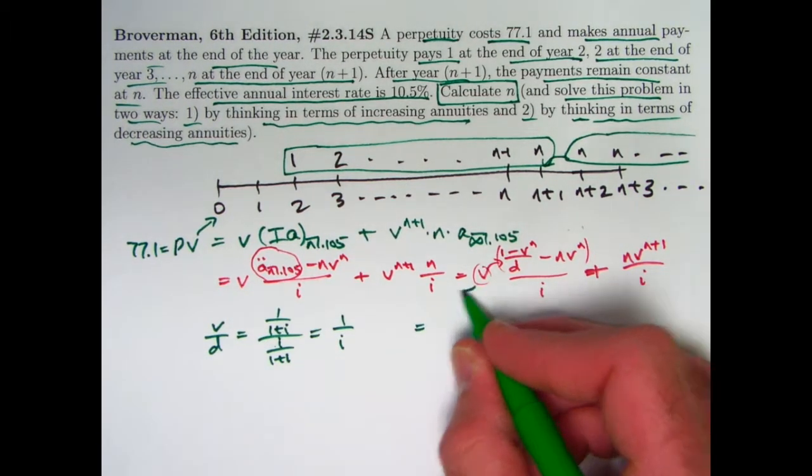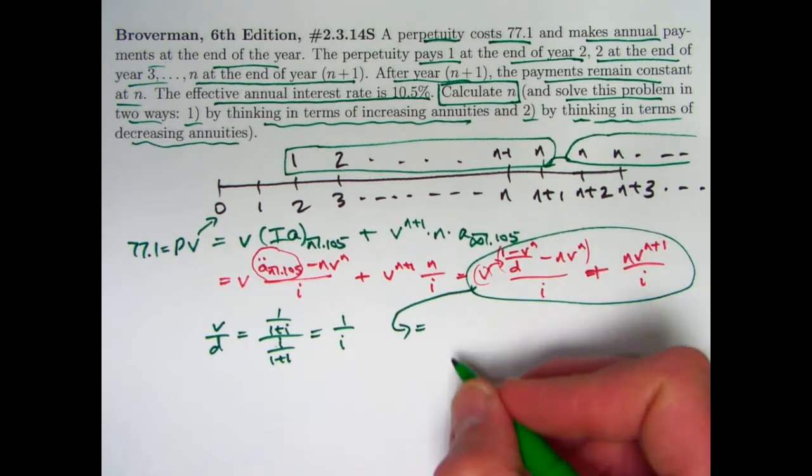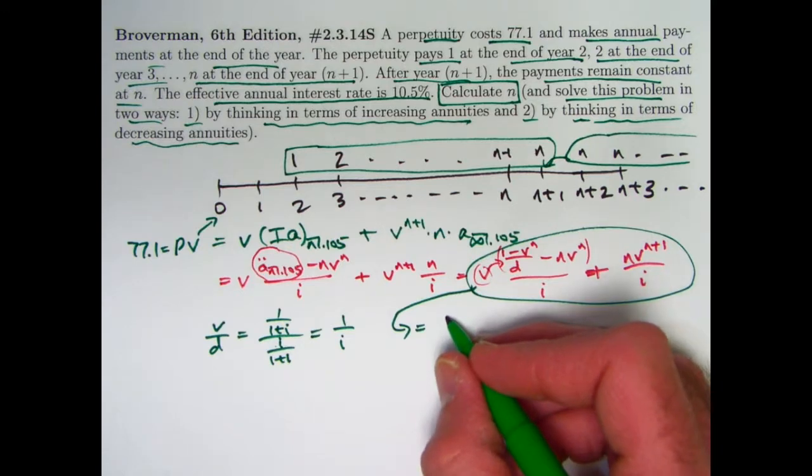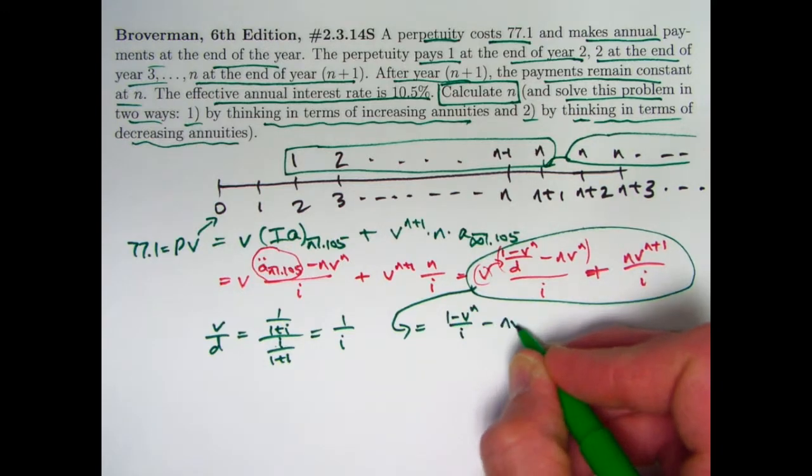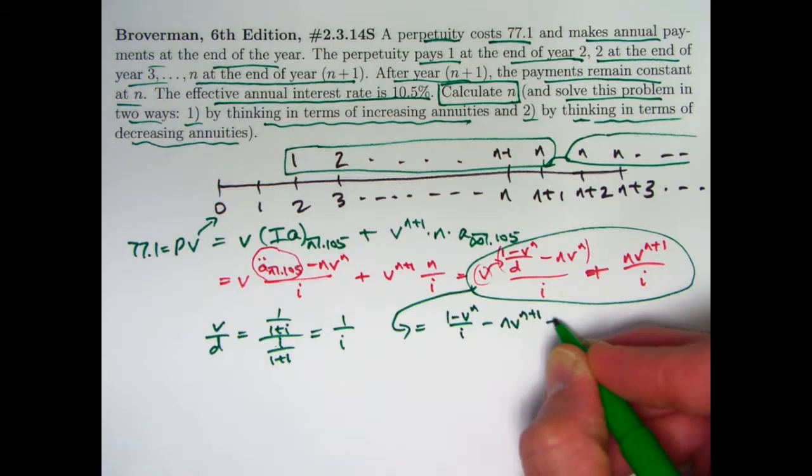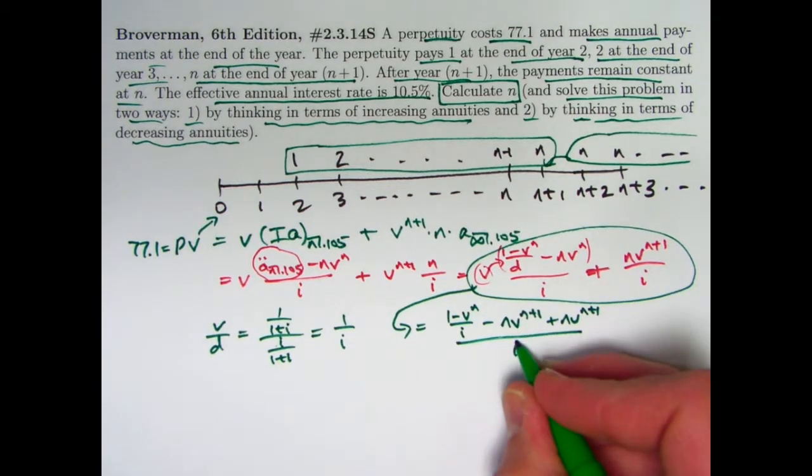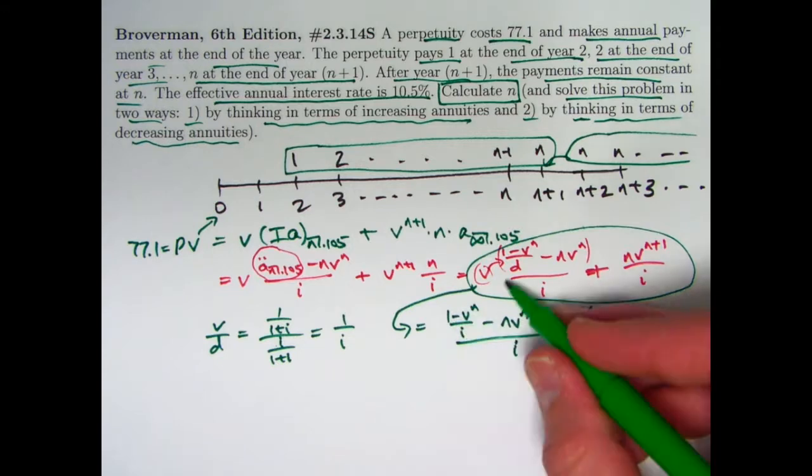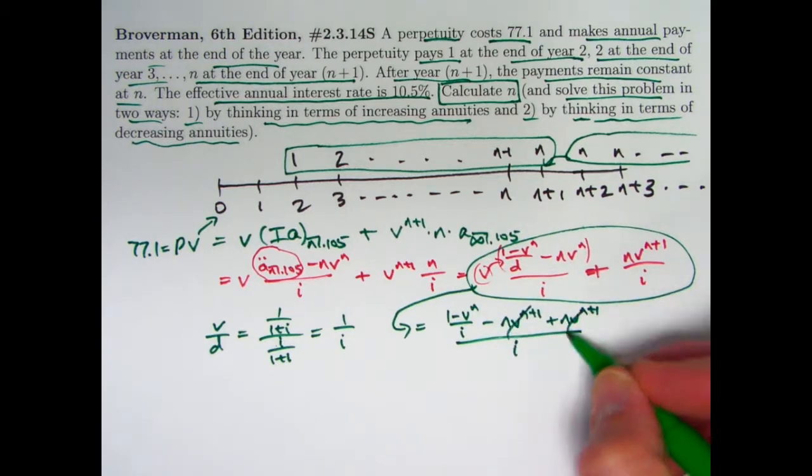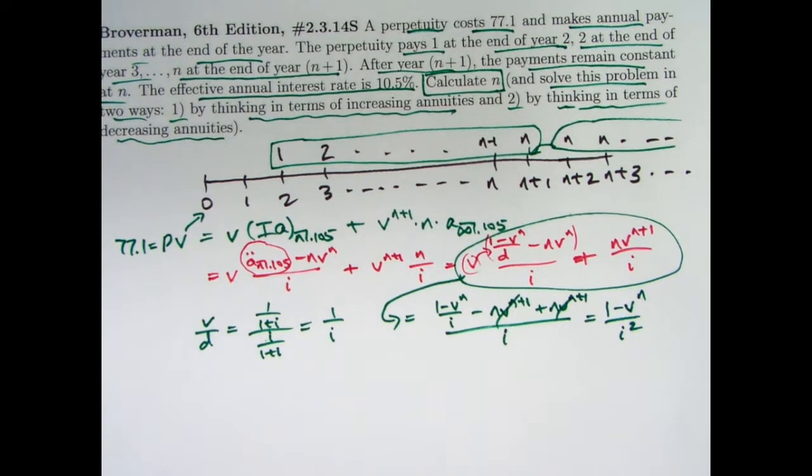So we get this thing here, this whole thing, written as one fraction. It can be written as 1 minus V to the N over I minus N V to the N plus 1 plus N V to the N plus 1 all over I. Right, I use the fact that V over D is 1 over I. V times V to the N is V to the N plus 1. These cancel. This all simplifies to 1 minus V to the N over I squared. It's not too bad, I guess.